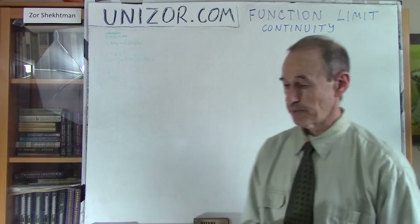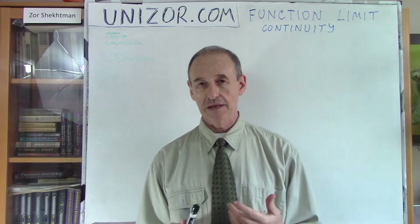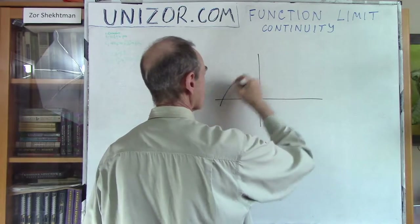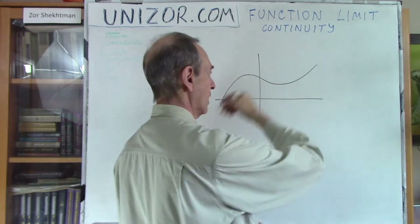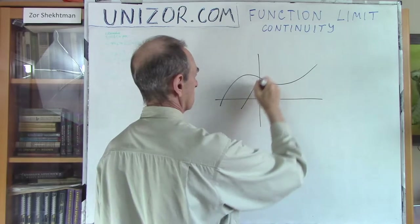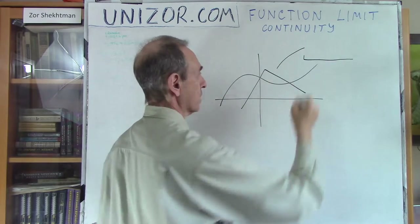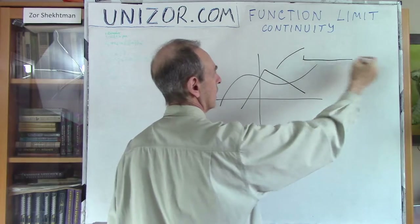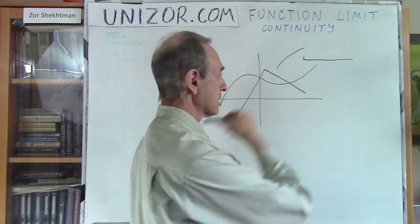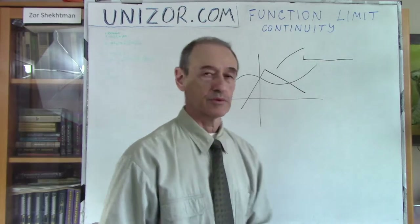So, talking about continuity. First of all, let's think about what is your intuitive understanding of what a continuous function is supposed to be. It looks like the graph of such a function should be smooth, right? Which means you are continually drawing the graph of this function without lifting your pen. It can be something like this — this is also continuous. But this is not, because you have to lift the pen, put it in another point, and then continue graphing the function.